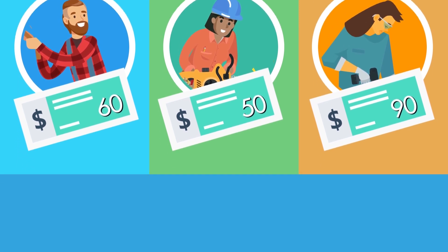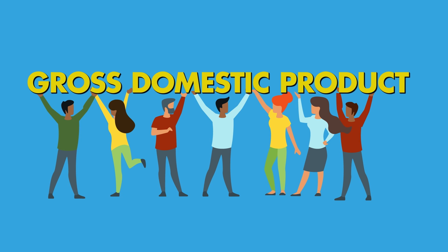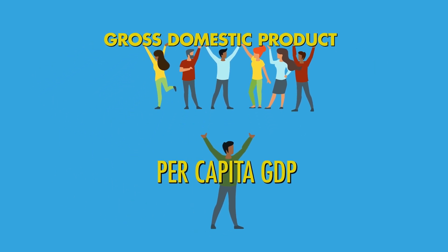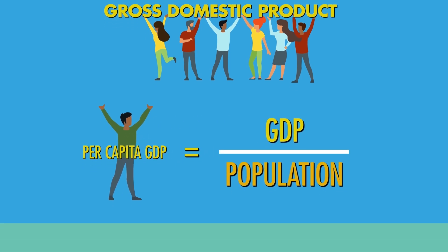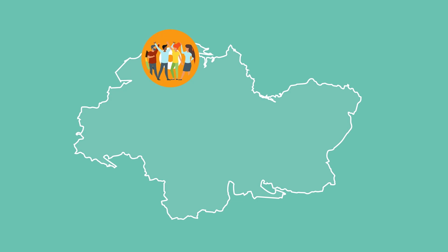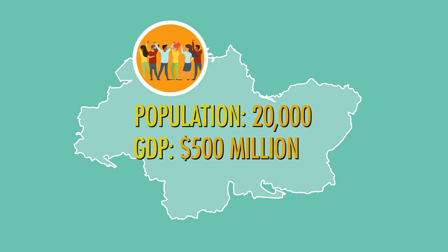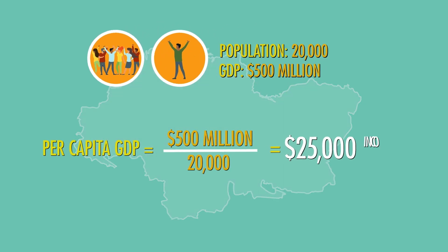To calculate the income that is created for a typical citizen every year, economists use the per capita GDP formula. They divide the value of a country's GDP by its population. For example, if a country with a population of 20,000 citizens has a GDP of $500 million, the per capita GDP is $25,000.